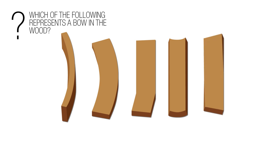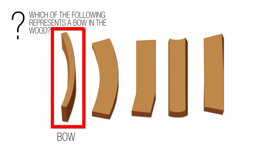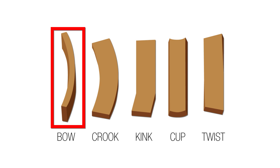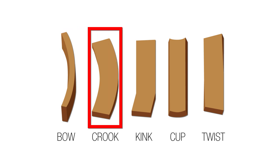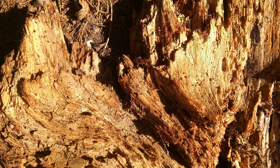Which of the following represents a bow in the wood? A bow is this one. Crooking, bowing, twisting, and cupping all come from differential shrinkage — the wood was cut in a way where a portion shrinks at a different rate than another portion based on where it is in the log. In the case of a crook, we can use it to our advantage: if using it as a joist or rafter, install it with the crown facing up as a camber so that once loaded, it's flat and may actually increase strength.